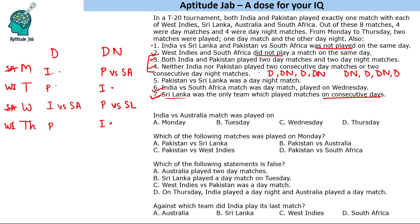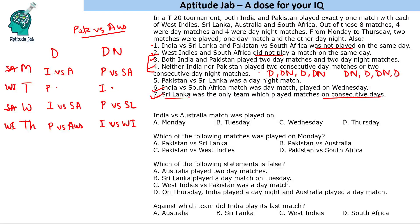West Indies plays on two days — one match against India and one against Pakistan. The remaining team to be placed is Australia, since it is not West Indies, South Africa, or Sri Lanka. There has to be a match between Pakistan and Australia. Since Sri Lanka is the only team playing on consecutive days, Pakistan versus Australia fits into a specific slot, making that India versus West Indies, and consequently Pakistan versus West Indies and India versus Sri Lanka fill the remaining positions.